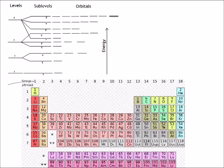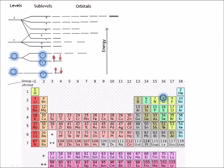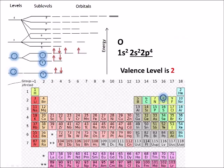Oxygen has eight protons and therefore eight electrons orbiting the nucleus. The electron configuration is 1s2 2s2 2p4, and the valence level is the second level.